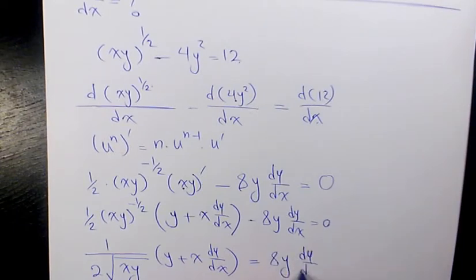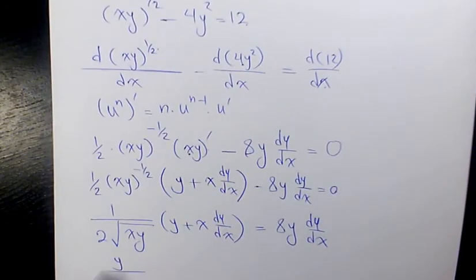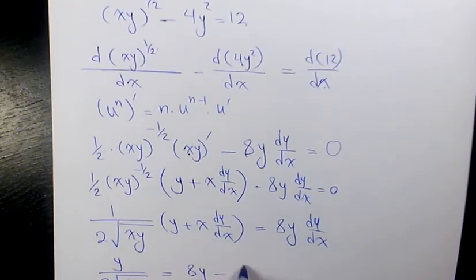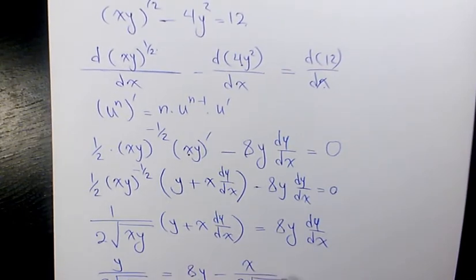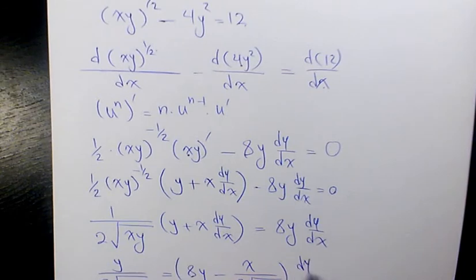I move 8y dy over dx to the other side. I need to move this part to the other side as well, so it's going to be y over 2 root xy equals 8y minus x over 2 root xy times dy over dx.